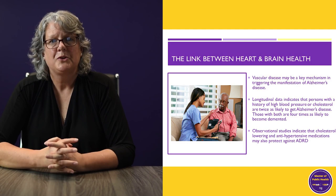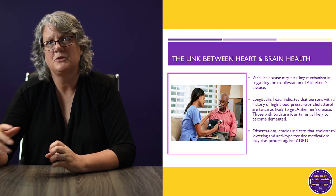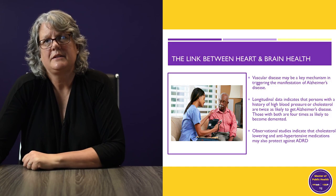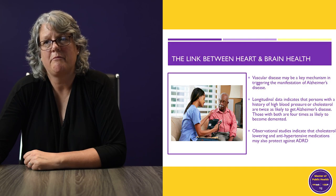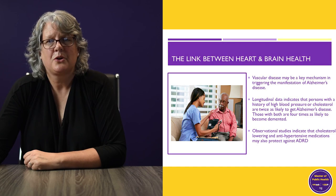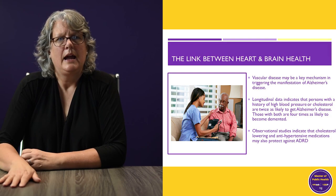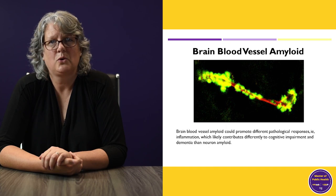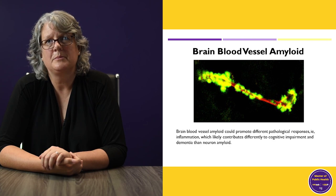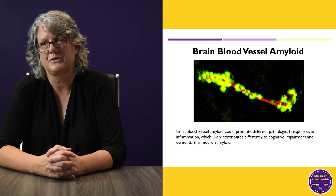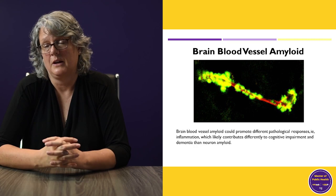Just a couple of facts from human studies: vascular disease is a key mechanism in triggering the manifestations of Alzheimer's disease. Longitudinal data indicates that people with a history of high blood pressure or high cholesterol are twice as likely to get dementia, and if they have both, they're four times as likely. There's also some anecdotal evidence that antihypertensive medications can help protect against dementia. This picture shows a fluorescent stain of a blood vessel in red with clumps of beta amyloid around it — high cholesterol and high blood pressure lead to increased levels of beta amyloid, as the inner lining of the vessel produces beta amyloid and vascular disease increases production.